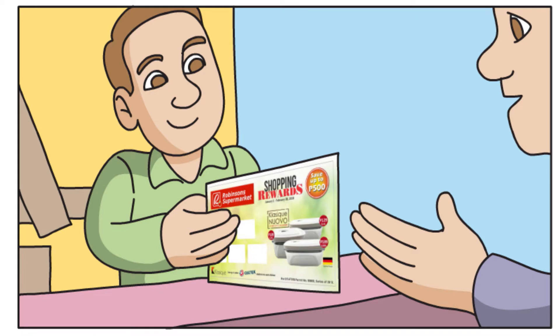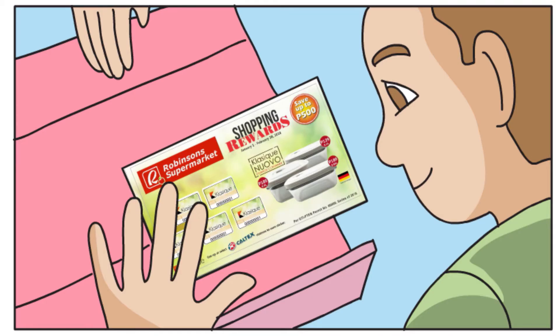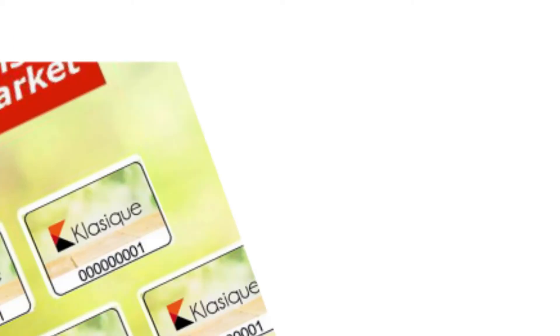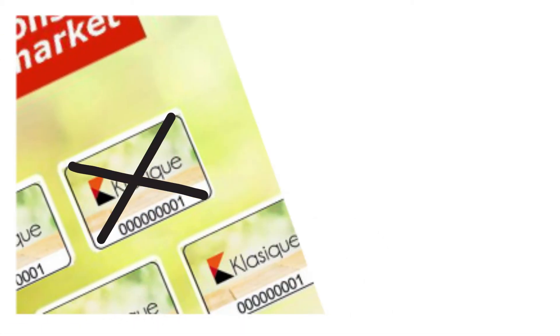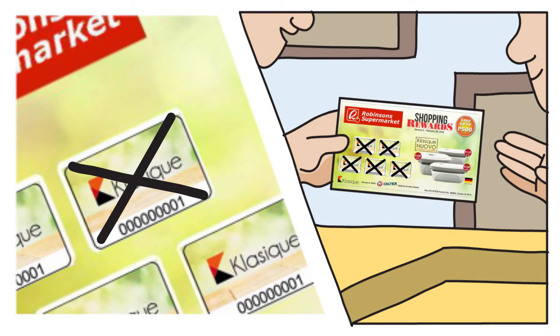Collector card must be available for the entire promotion. When customers redeem a reward, cashier must check all five stickers, scan barcode on the reward, collect cash and cross out all stickers on the collector card with a black marker and return to the manager at the end of the shift.